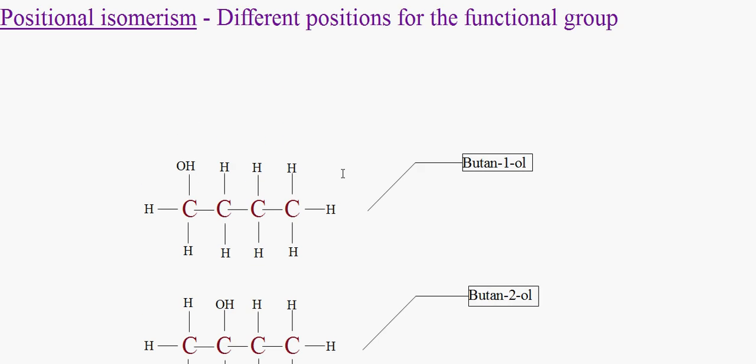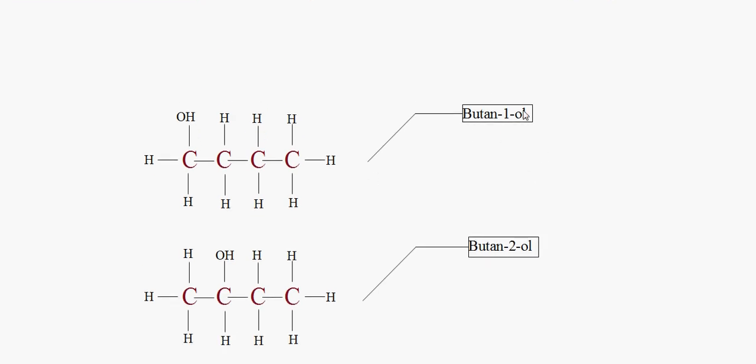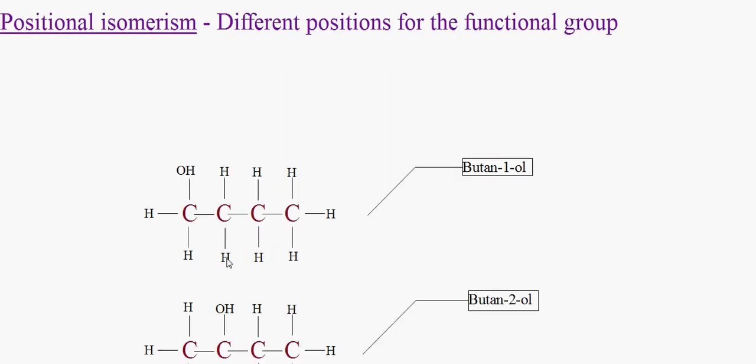And then the positional isomer for butan-1-ol would be butan-2-ol. The only difference here is where the OH is placed on the second carbon. So those are positional isomers.